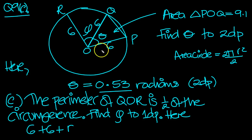r phi, and radius is 6, so that'll be 6 phi is equal to, and it's half the circumference. So 2 pi r is the circumference, or pi d, so it's just pi r times 6.